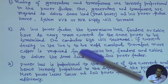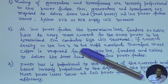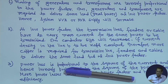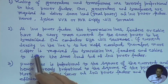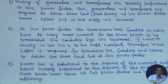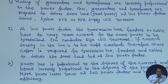Therefore, more copper is required for transmission line feeders and cables to deliver the same load at low power factor. At low power factor, current will be high, so conductor size will increase, and a greater volume of copper — or conductor material such as ACSR — will be required for the same load to be transmitted.